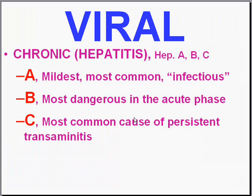They're all chronic infections and they all have acute phases. We'll be talking about them more in the GI chapter, but briefly: Hepatitis A is the mildest and most common, approaching 100% prevalence in underdeveloped nations. Hepatitis B, the so-called serum hepatitis, is probably the single most serious common type in the acute phase. Hepatitis C is probably the most common cause of persistent transaminitis, or elevation of AST and ALT, in adults in the United States.